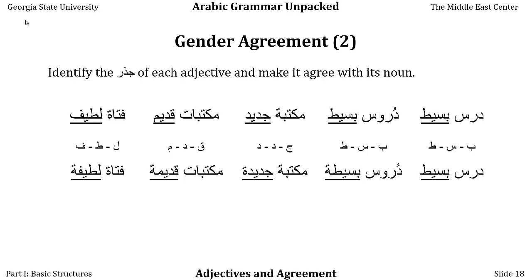Again, this is really fairly simple. As long as we stay with the non-human plural rule — feminine singular — regardless of whether the original noun was masculine or feminine, it doesn't matter. Non-human plural is feminine singular. When we get into human plural, things get a little more complicated, but the very basics are pretty simple. Like a lot of things about Arabic, it's complicated but not especially difficult.